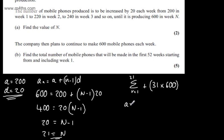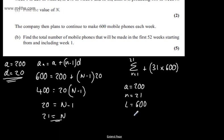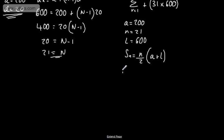Let's look at the sum. The first term is 200, the number is going to be 21, and the last term is going to be 600. We can use the sum of N terms of an arithmetic series to sum this lot up. So the sum of N terms is N over 2 times A plus L, where A is the first term and L is the last term. So the sum of the first 21 terms will be 21 over 2 times 200 plus 600.